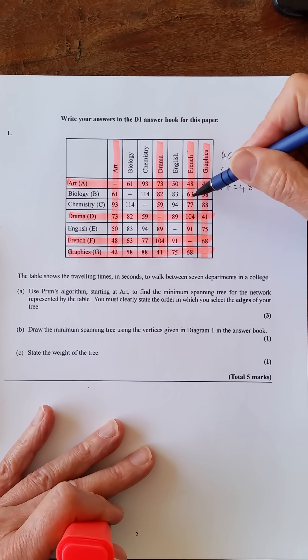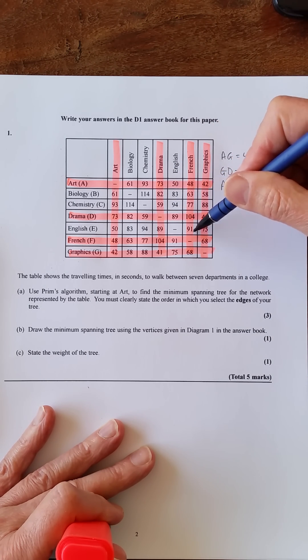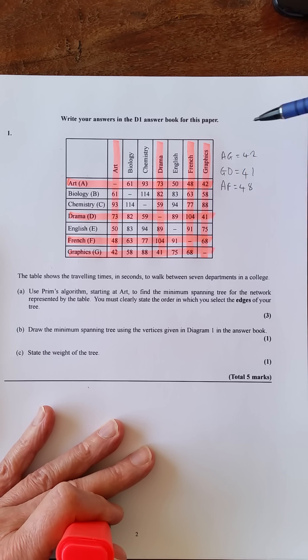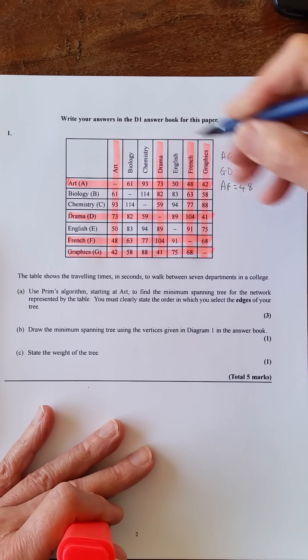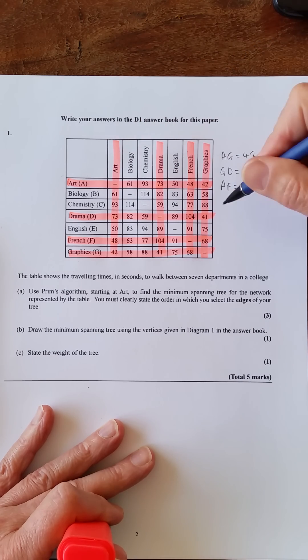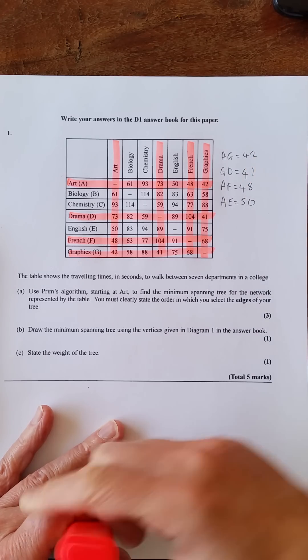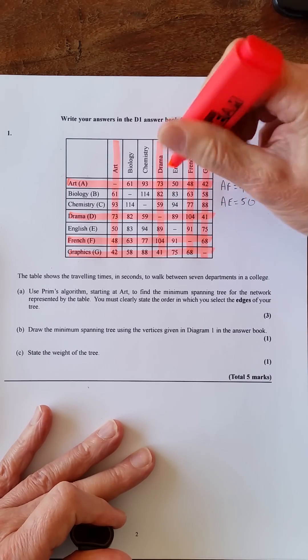So 61, 93, 50, 82, 59, 89, 63, 77, 91, 58, 88, 75. So you can see that this one's the shortest here E, and it's going from A, so AE, AE equals 50. So what we'll do is we'll highlight that.